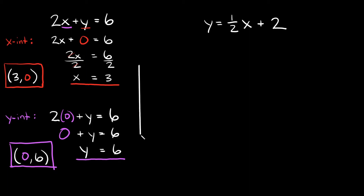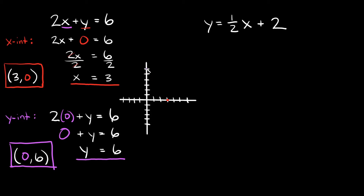If we wanted to graph this, we just draw a quick graph and plot our points. Our x-intercept is at 3 comma 0 — starting from the origin, that's 1, 2, 3, right there. Our y-intercept is at 0 comma 6 — going up 1, 2, 3, 4, 5, 6. Then you just draw a line between the two points. The x-intercept is where the line crosses the x-axis, and the y-intercept is where it crosses the y-axis.